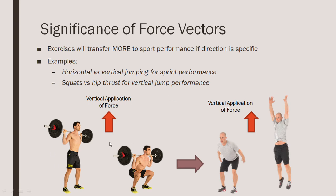To make that point more clear with that last example: if we do a back squat we have vertical force application. The velocity is not specific, neither is the loading, however the direction is, and so the transfer will be greater to vertical jump performance than if we did another strength exercise like a hip thrust with a horizontal force emphasis.